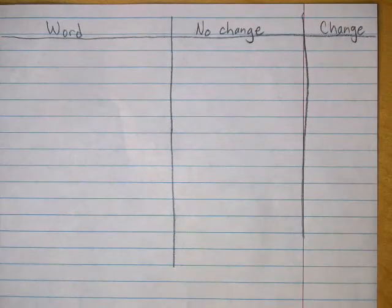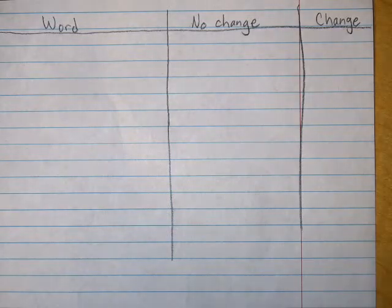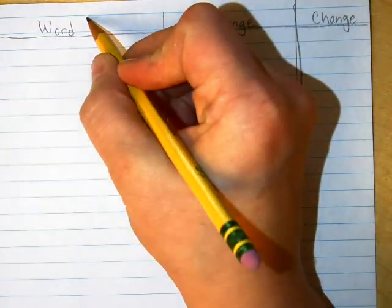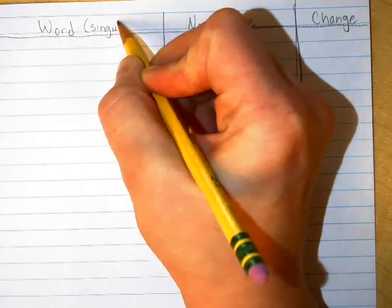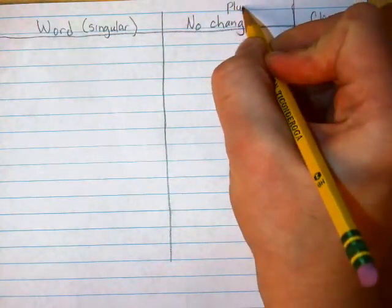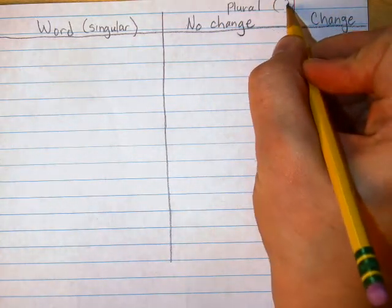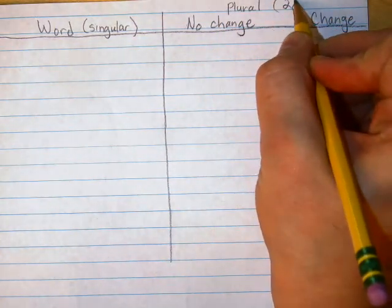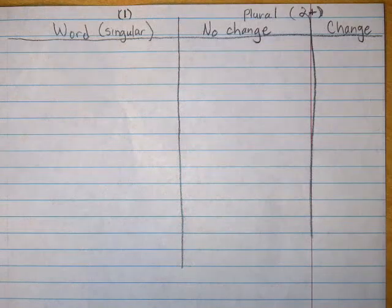Okay guys, so we're going to practice this week's spelling words, just a little bit. This is when sometimes we have words when they're in the singular, which means we just have one of them. And then we change it to the plural. Sometimes there's a change, and sometimes there's not. Singular just means only one of them; plural means two or more.